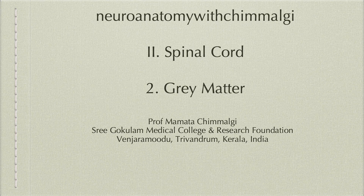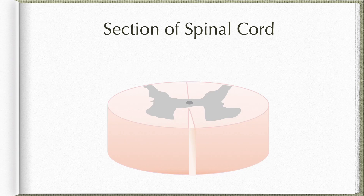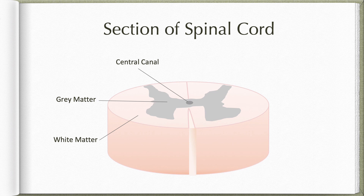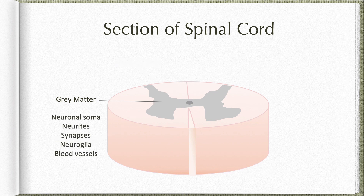In this video, let us study the grey matter of the spinal cord. In a section of spinal cord, while the outer layer is formed by white matter, the central core is formed by the grey matter which is arranged around the central canal. Grey matter is a complex mixture of neuronal soma, neurites, synapses along with the supporting neuroglial cells and the blood vessels.